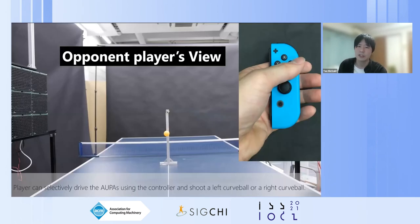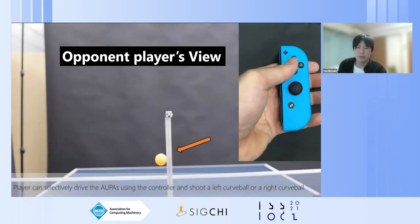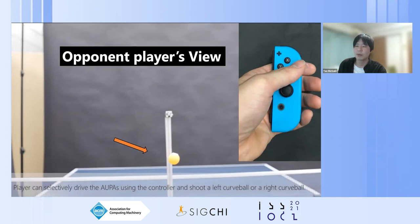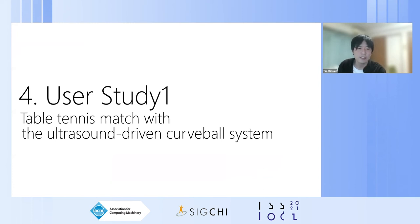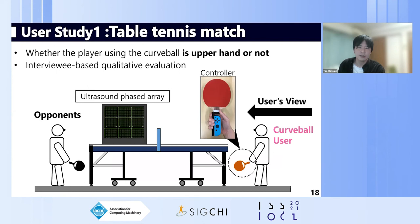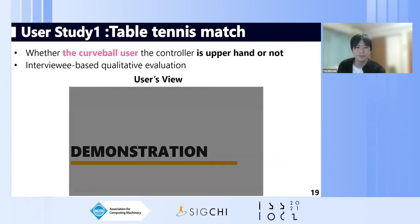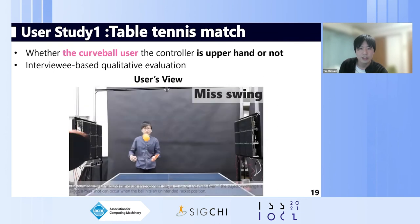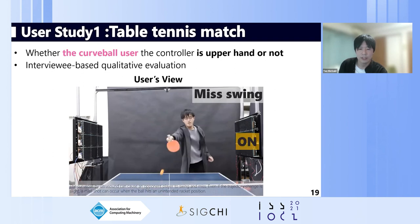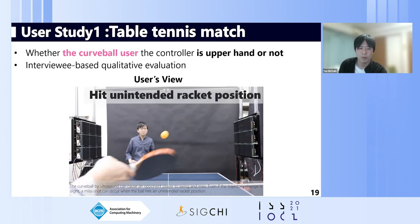This video shows the actual motion of the controller — when pressing the button, the ultrasound force is presented to the ping-pong ball. In the user study table tennis match, we evaluated whether the player using the curveball system had the upper hand. The opponent player had a normal table tennis racket while the curveball user had the controller. The curveball can cause mistakes by the opponent player.